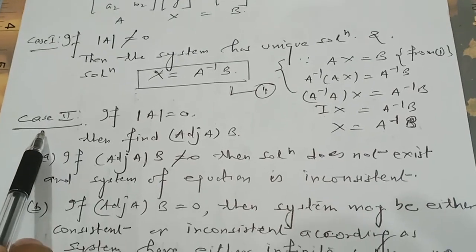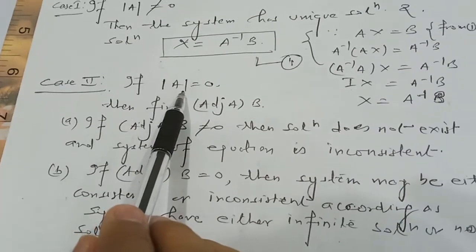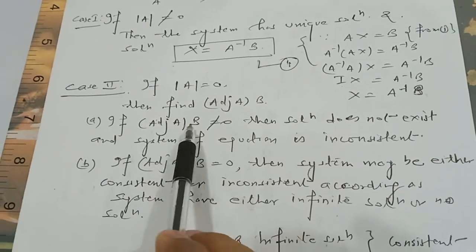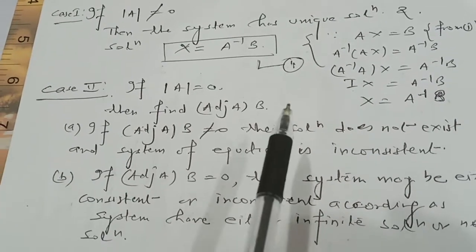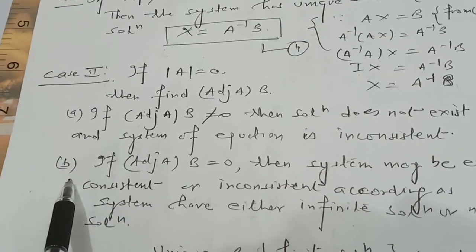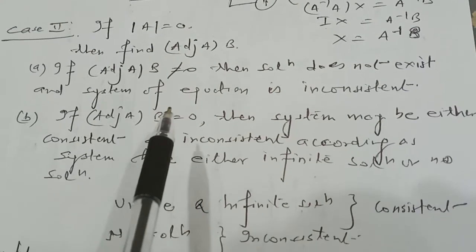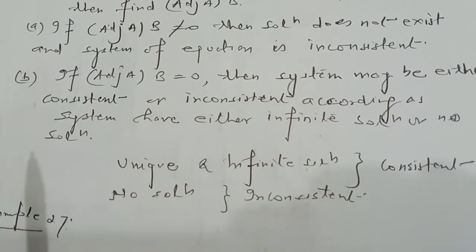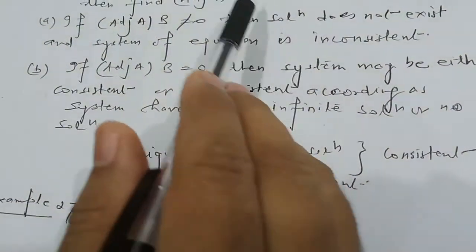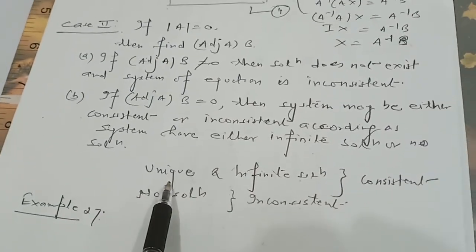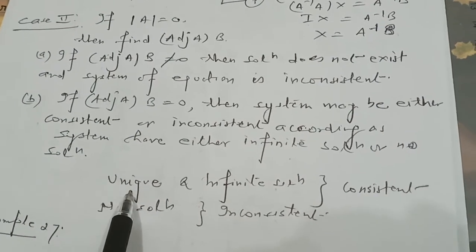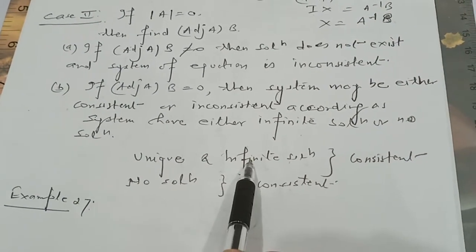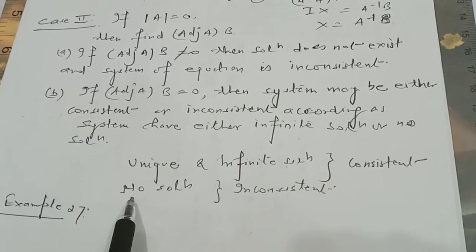The second case is when determinant A equals zero. Then we compute adjoint A times B. If adjoint A times B does not equal zero, then the solution does not exist and the system is inconsistent. If adjoint A times B equals zero, then the system may be either consistent with infinitely many solutions or inconsistent with no solution. To summarize: unique solution and infinite solutions mean the system is consistent; no solution means inconsistent.